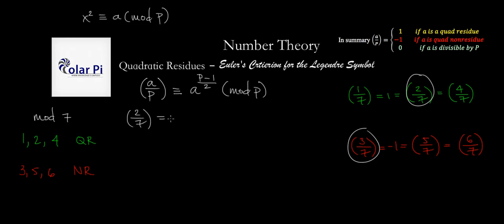For 2 over 7, Euler's criterion would say that 2 over 7 would have to be congruent to 2 to the (7 minus 1) over 2, so that's 2 to the 6 over 2, so that's 2 to the 3rd mod 7. But 2 to the 3rd we know is 8, so that's 8 mod 7, and we know that 8 is the same as 1 mod 7. So as expected, looks like 2 over 7 is 1.